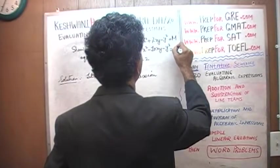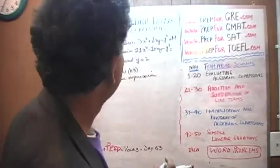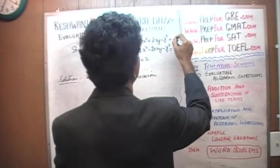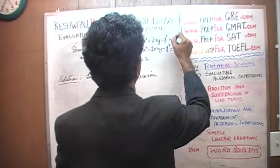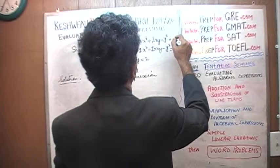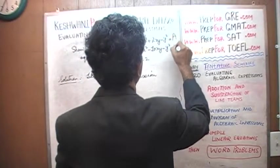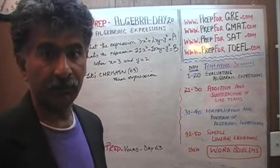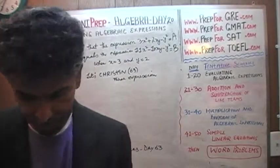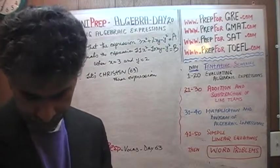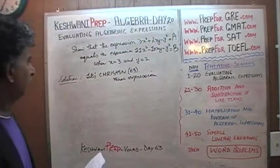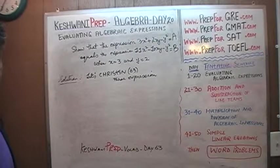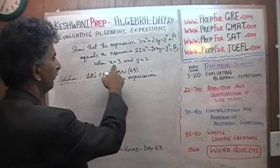Let's call them A and B. So we have expression A and we have expression B, and our job is to show that these two expressions — expression A and expression B — are equal to each other when x equals 3 and y equals 2.